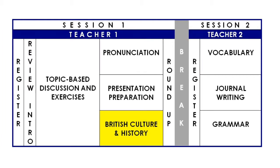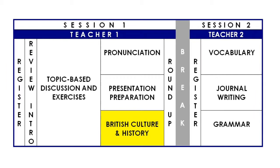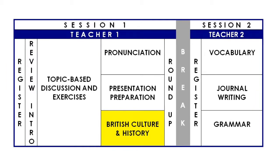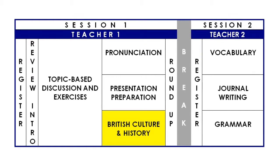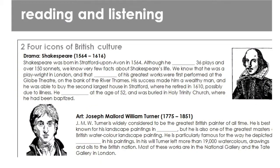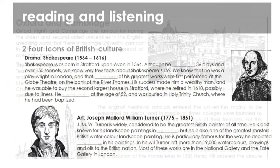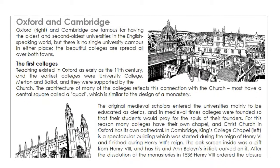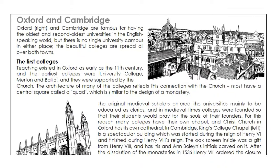Teenage students may not seem particularly interested in aspects of British culture, but they will almost certainly have a programme of excursions running alongside their lessons, so it's important that you exploit this in class. There are 12 short texts in the Pronunciation and Culture workbook, and these can be used as reading or listening exercises. Find out which places your students will be visiting during their time in Britain and select which texts you think will be most relevant.